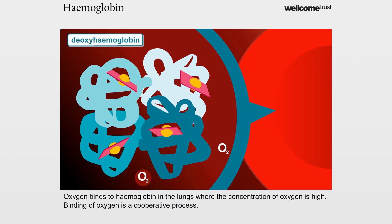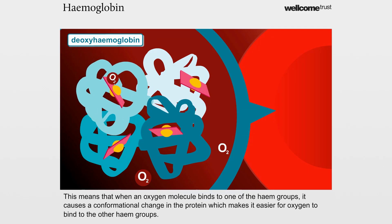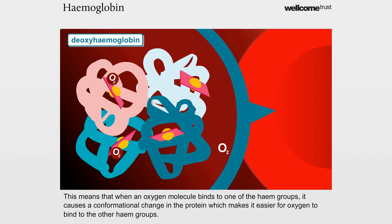Oxygen binds to haemoglobin in the lungs, where the concentration of oxygen is high. Binding of oxygen is a cooperative process. This means that when an oxygen molecule binds to one of the heme groups, it causes a conformational change in the protein, which makes it easier for oxygen to bind to the other heme groups.